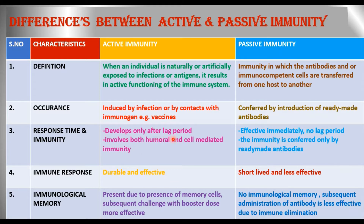Regarding response time: active immunity develops only after a lag period — it takes time to develop. But passive immunity is effective immediately; there is no lag period. The immunity involved in active immunity is both humoral and cell-mediated immunity.